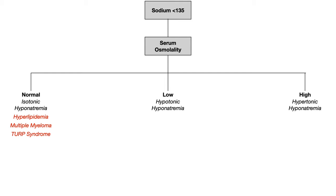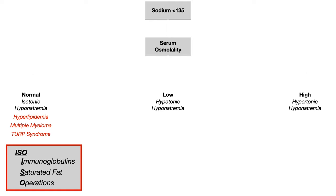To memorize the causes of isotonic hyponatremia, remember ISO: I for immunoglobulins in the case of multiple myeloma, S for saturated fat in the case of hyperlipidemia, and O for operations in the case of TURP, because that's a surgery.